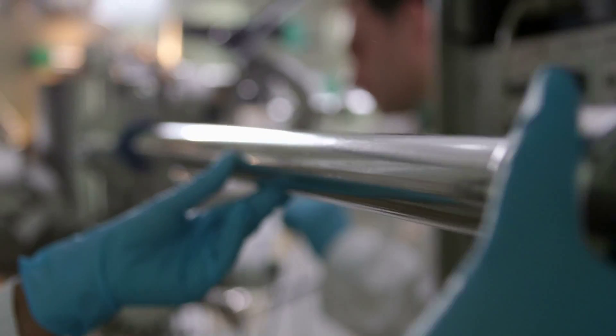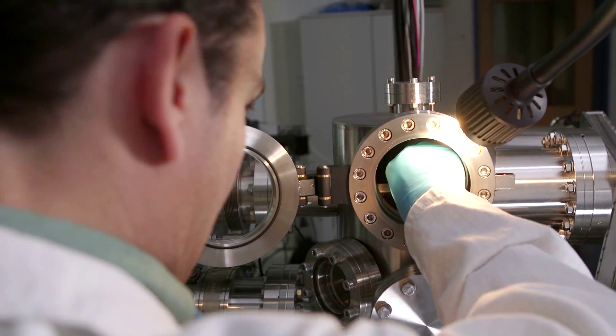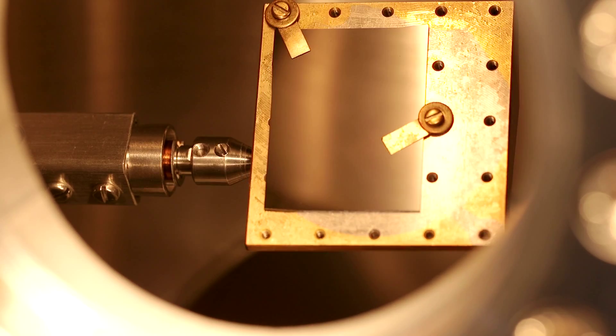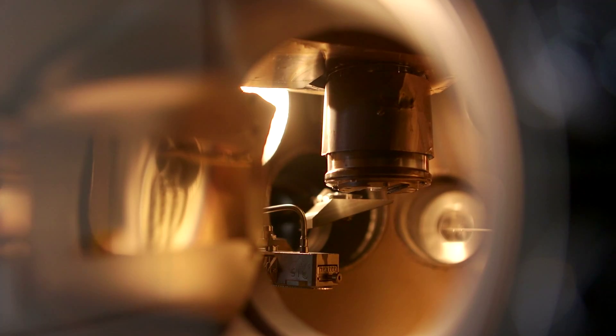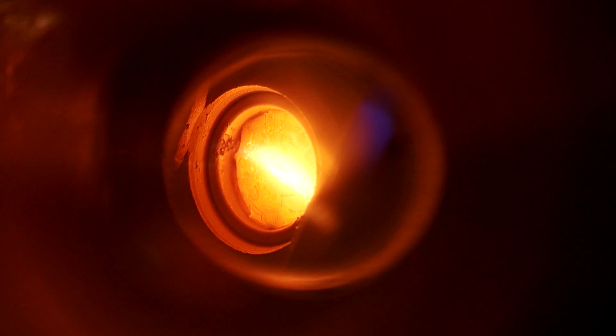After UV lithography, we bring our sample to the evaporator, where we evaporate around 20 nanometers of gold, which is a very thin layer, only a few atoms high, and then we take the sample out and then we do lift off. The areas that have been patterned, the gold will stay. The areas that have not been patterned, the gold will go off. So we will have the electrodes.